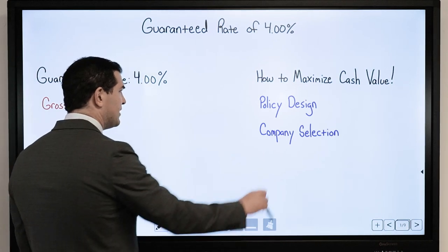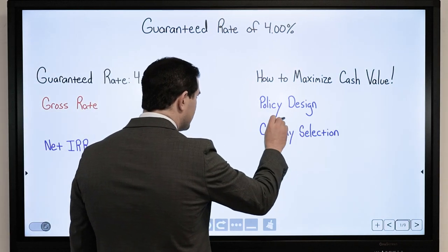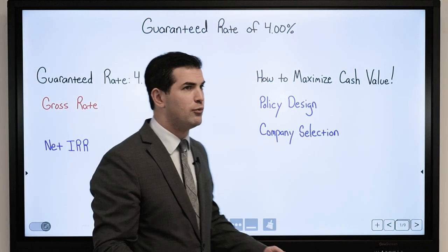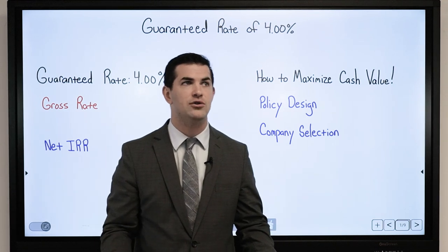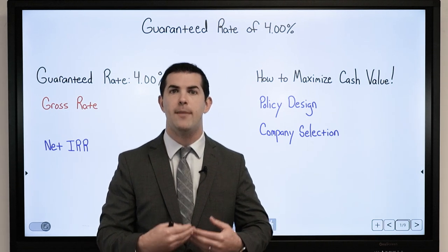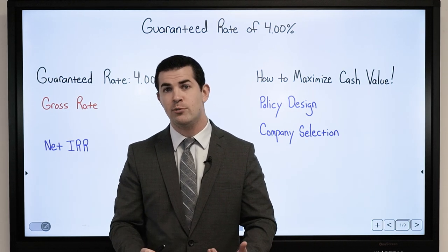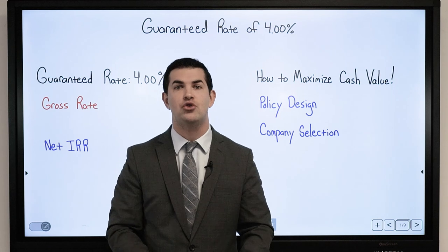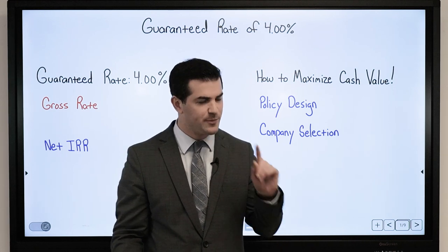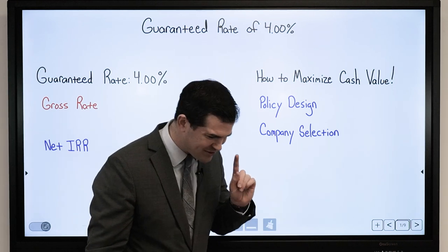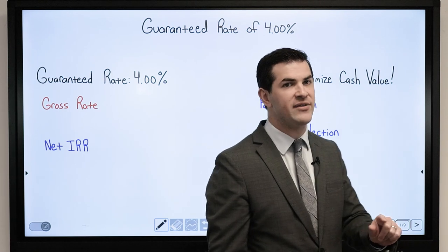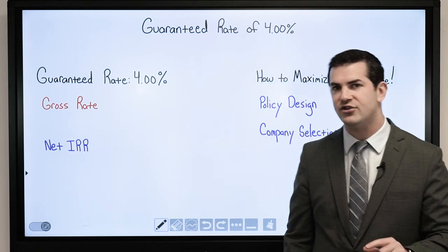But these two items — policy design and company selection — are the most important things to look at. What it requires for an agent is to show multiple options, and as a consumer we want to make sure we are seeing multiple options, especially if the guaranteed values are of concern to us.